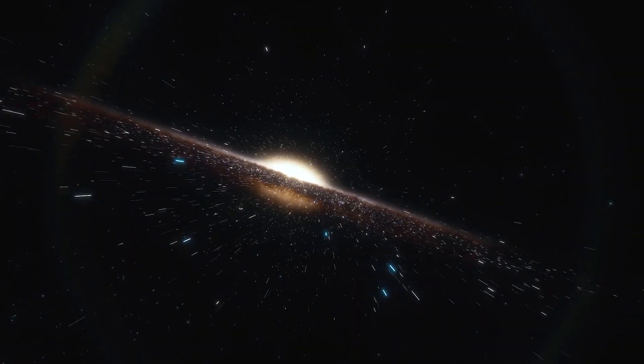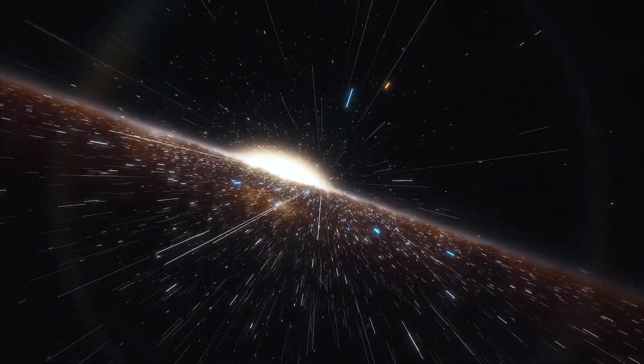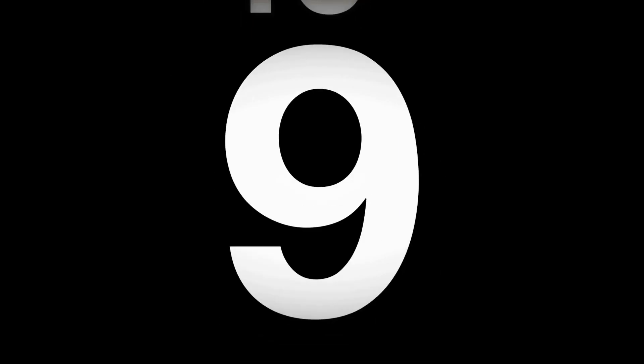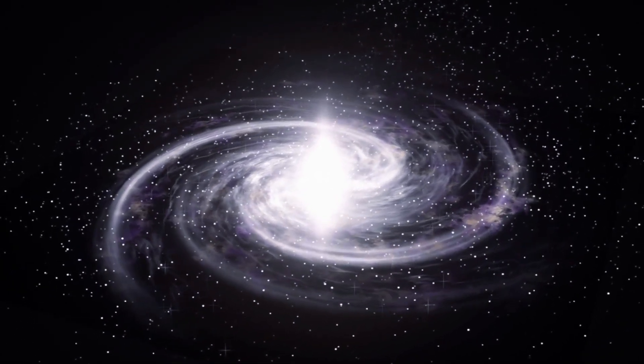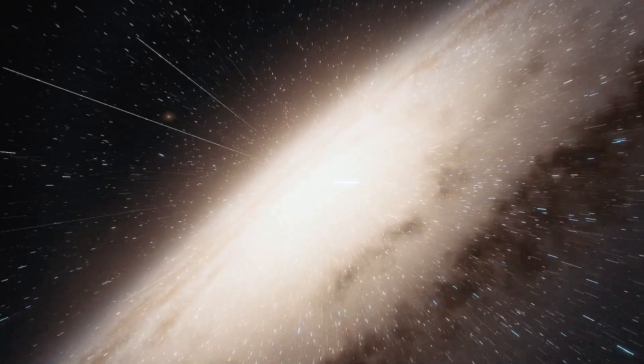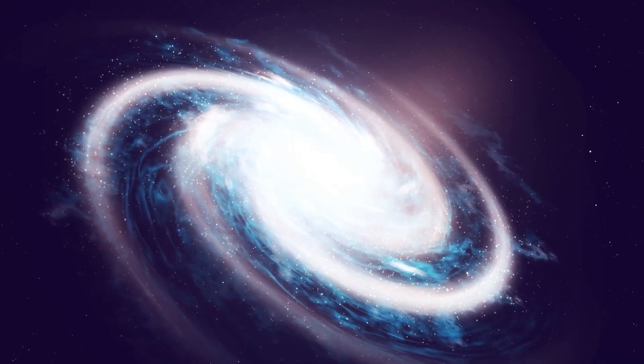Number 9: Our galaxy, the Milky Way, is so massive that even at the speed of light, traversing it would take 100,000 years. The Milky Way galaxy is a massive collection of stars, dust, and gas. It's called a spiral galaxy because it looks like a spinning pinwheel when viewed from the top or bottom.